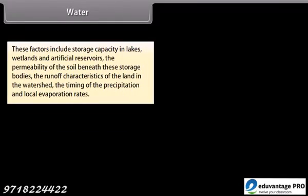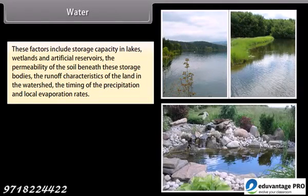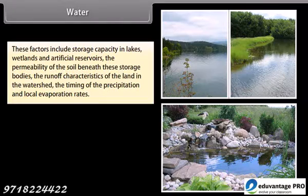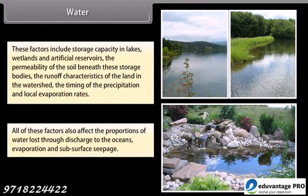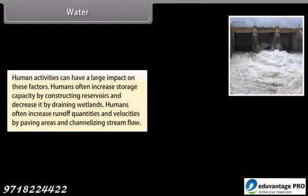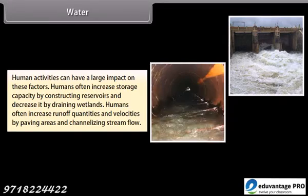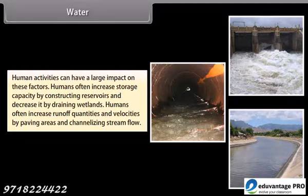These factors include storage capacity in lakes, wetlands and artificial reservoirs, the permeability of the soil beneath these storage bodies, the runoff characteristics of the land in the watershed, and the timing of precipitation and local evaporation rates. All of these factors also affect the proportions of water lost through discharge to the oceans, evaporation and subsurface seepage. Human activities can have a large impact on these factors. Humans often increase storage capacity by constructing reservoirs and decrease it by draining wetlands, and often increase runoff quantities and velocities by paving areas and channelizing stream flow.